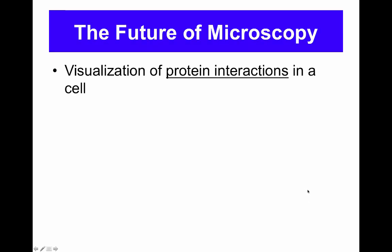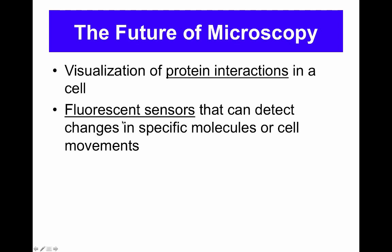What does the future of microscopy hold? With the advances in optics, computers, and engineering, we can now visualize proteins interacting with one another in the cell in real time. We can look at images with FRET or with FRAP, and I will go over this with you in tomorrow's lecture. The other thing that is very interesting is the potential generation of fluorescent sensors that can detect changes in specific molecules within the cell or can check when the cell is moving. For example, if you have a fluorescent sensor that emits fluorescence when intracellular calcium increases beyond a particular threshold, then you can generate live images within cells as the event of calcium uptake is being measured in real time.